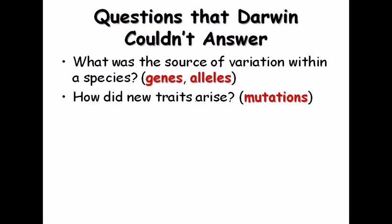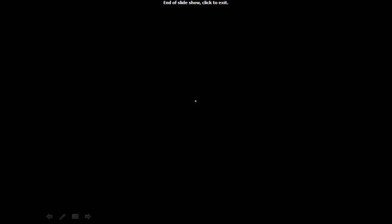How does a spontaneous new trait arise? The answer is mutation. As discussed in previous videos, mutation can lead to a positive effect — the arising of a new trait that is beneficial for the organism, allowing it to survive. Traits arising from mutation could be positive or negative depending on the situation the organism is dealing with.